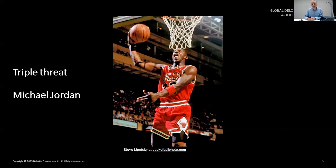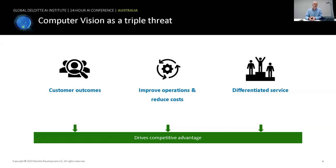I like to think of computer vision as a triple threat. I was trying to find a good example of a triple threat recognized around the world — maybe it's showing my age, but Michael Jordan from the Chicago Bulls comes to mind. He could shoot, he could pass, he could dribble, and he became such an asset to the Chicago Bulls, helping them win so many world championships. Computer vision unlocks the same opportunities to create assets for companies — better customer outcomes through new features, improved operations through speed and efficiency, cost reduction, and a differentiated service from competitors. It's this triple threat combination that really helps drive competitive advantage from investing in computer vision projects.